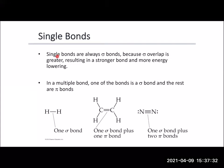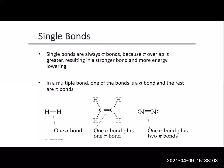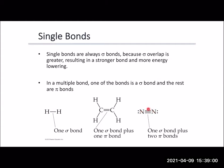Single bonds are always sigma bonds because the overlap is greater and stronger — it takes more energy to break a single bond. In multiple bonds, one has to be a sigma bond and the rest are pi bonds. The sigma bond is usually from hybridized orbitals and pi bonds are from unhybridized orbitals. So for H2 with one line, that's one sigma bond. For ethylene with two lines between the carbons, one is sigma and the other is pi. For N2 with a triple bond, one is a sigma bond and the other two are pi bonds. A triple bond equals one sigma plus two pi bonds.